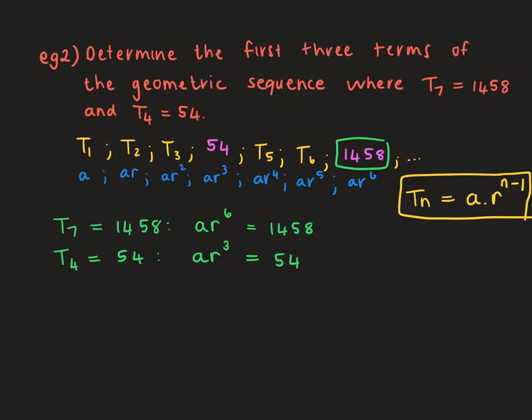Instead of making A the subject of the formula as we did before, I'm going to show you something easier. We are going to divide these two equations. The reason we divide is because the A's cancel each other out. Then R to the sixth divided by R to the power of 3 is just R cubed. And 1458 divided by 54 equals 27.